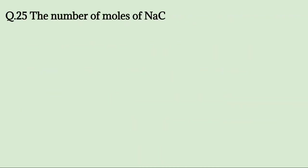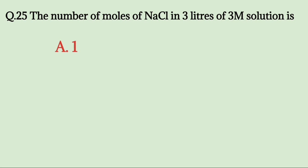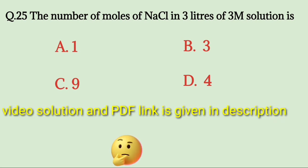The number of moles of NaCl in 3 liters of 3M solution is: A. 1, B. 3, C. 9, D. 4. Try to solve it. The correct answer is C. 9.